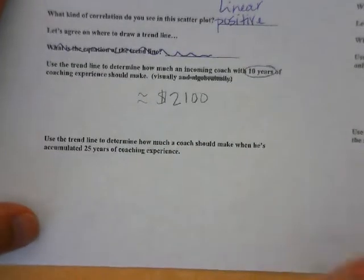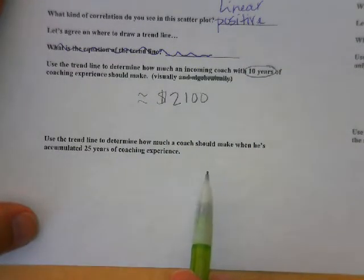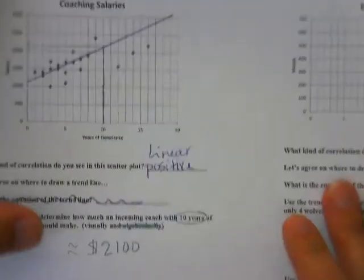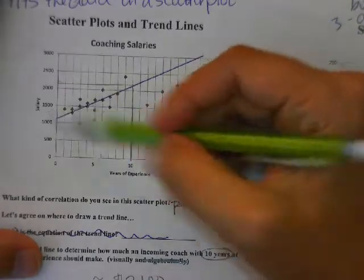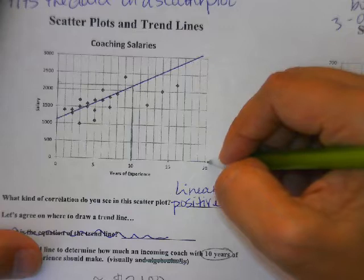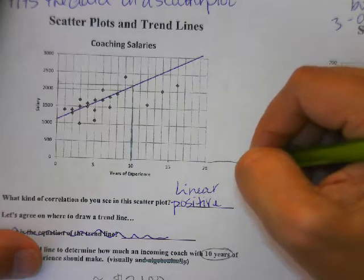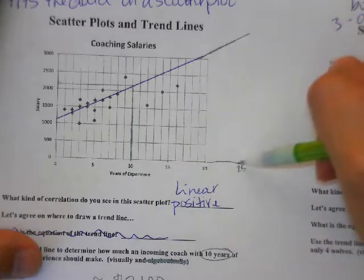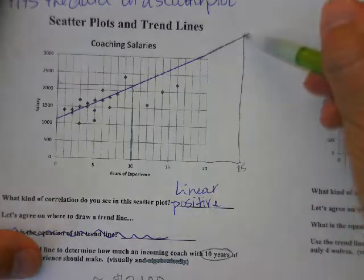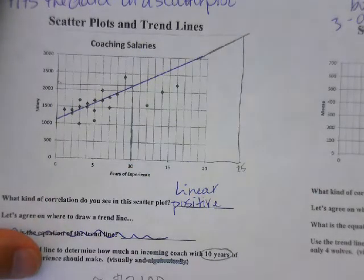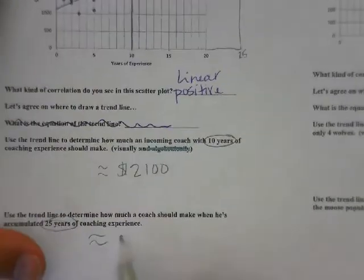So the trend line's purpose is to help us make predictions. The next question is: use the trend line to determine how much a coach should make with 25 years of experience. Look at your axis label, find 25, you can extend the line out, and you can say maybe around $4,000 to $5,000. You're not going to be too far off.